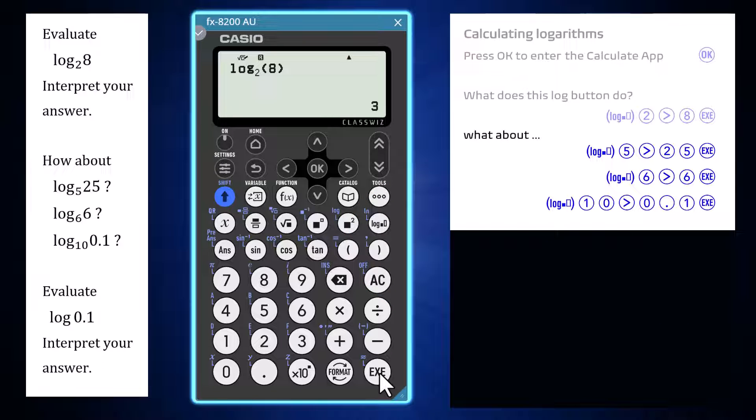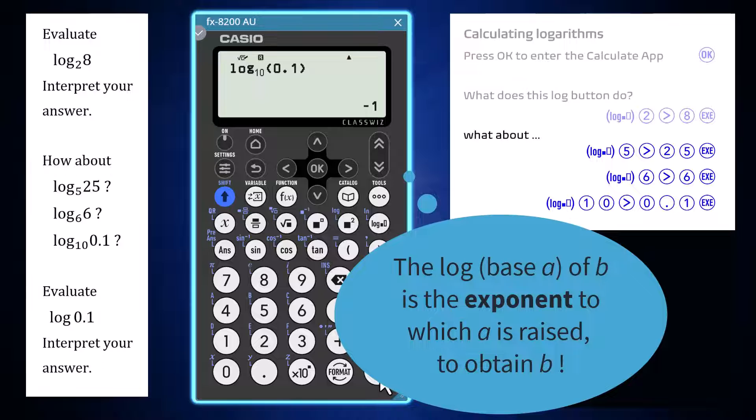Let's evaluate these next three logarithms to see if this definition fits with them also. With 5 to the power of 2 being 25, 6 to the power of 1 being 6, and 10 to the power of minus 1 being 0.1, it is indeed looking like a good working definition of a logarithm.